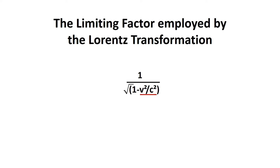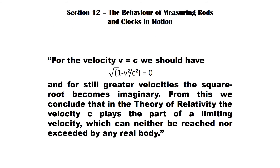A cursory examination shows that if v is greater than c, then the square root is of a negative number and hence gives an imaginary number. And if v is equal to c, then the square root is of zero, which results in a zero divide. Einstein supplies the fundamental conclusion that in the theory of relativity, the velocity c plays the part of a limiting velocity which can neither be reached nor exceeded by any real body.